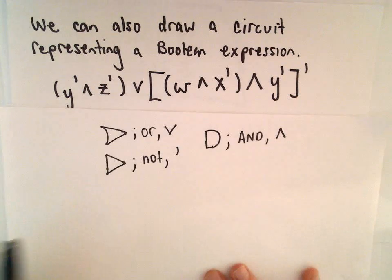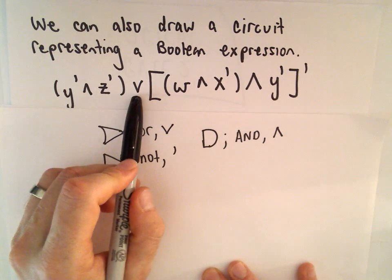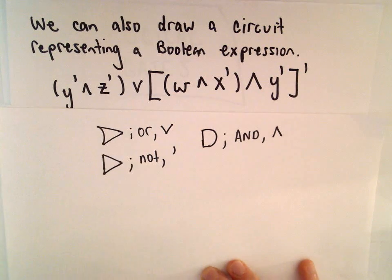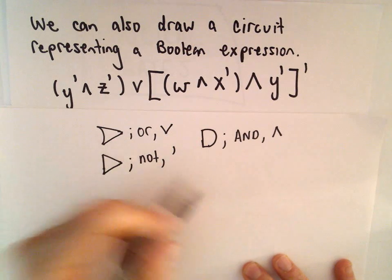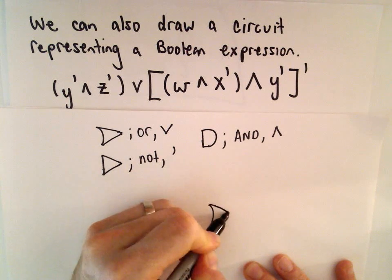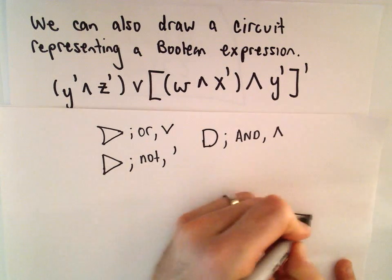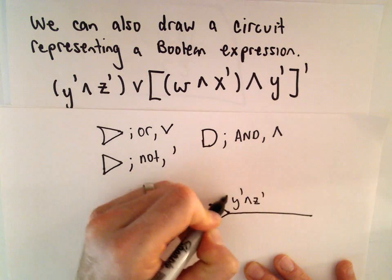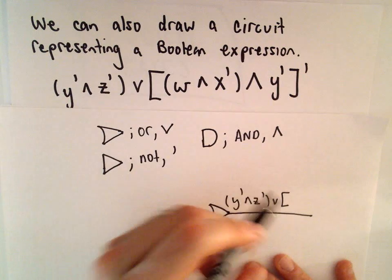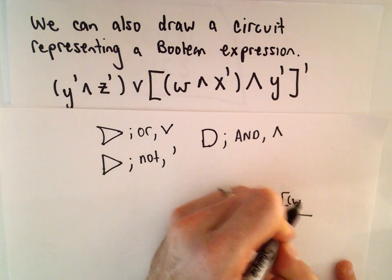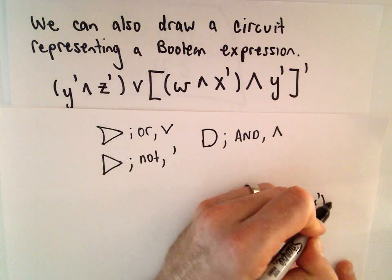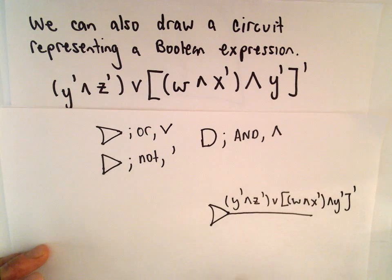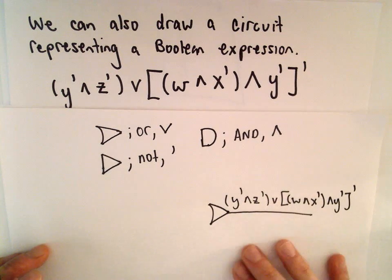The first thing we're going to do is just kind of work inside out. I see two expressions separated by this OR statement, so I'm going to have an OR gate in this case. The statement that I want to be coming out will be the final statement: NOT Y and NOT Z or all of this other stuff. W and NOT X and NOT Y, and we're going to take the complement or NOT all of that. This is what we want our output to be.